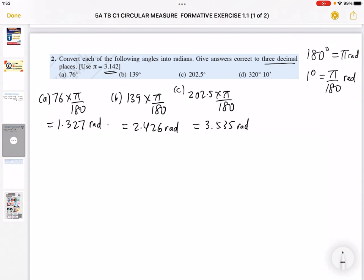This one is in degrees and minutes. I hope you know how to use the degree and minute button in your calculator. You type 320 degrees, the degree and minute button, press 10, and then press the same button. You multiply with pi over 180. Use pi as 3.142. You may have to press the degree and minute button once again, otherwise the answer will give you degrees and minutes. So press the button again, you get 5.589 radians.